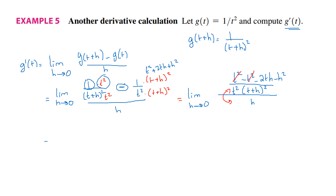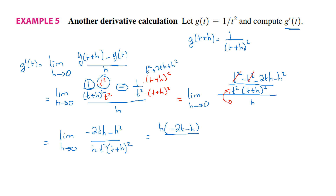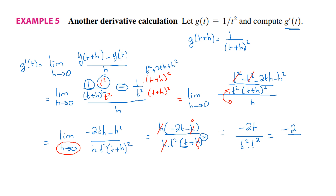Our expression is now the limit as h goes to 0 of minus 2th minus h squared, divided by h times t squared times t plus h squared. Take h in the numerator as a common factor: minus 2t minus h, divided by h times t squared times t plus h squared. Cancel the h. Substituting h by 0, the answer is minus 2t divided by t squared times t squared. Cancel one t: the result is minus 2 over t cubed. That's the final answer.